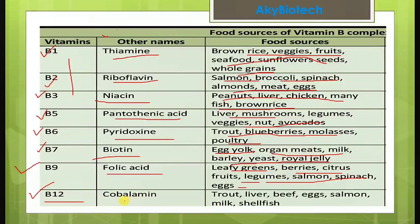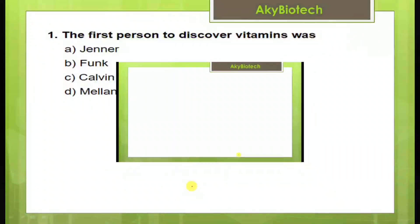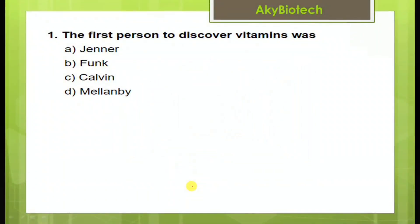Vitamin B12 — cobalamin — food sources include trout, liver, beef, eggs, salmon, and milk.